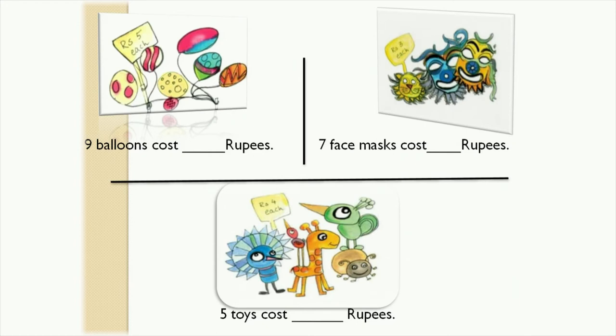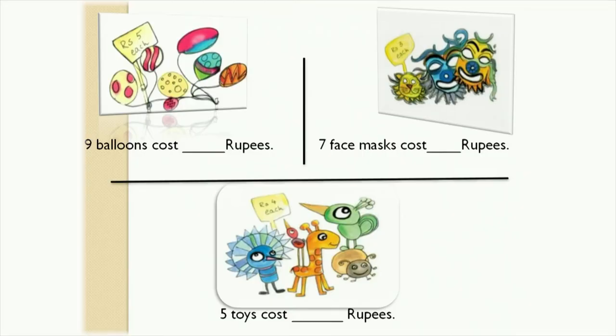Do the same with the mask and with the toys. With the toys, how many toys do I have to buy? 5 toys. And what is the cost of 1 toy? Rupees 4. So now what is your work? You have to calculate what will be the cost of 5 toys at rupees 4 each, and write it down. You can try it out. And now let us learn a story.